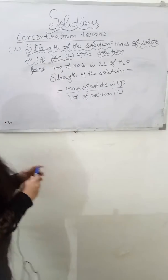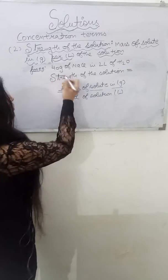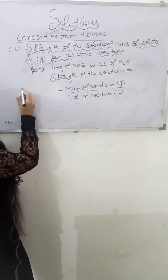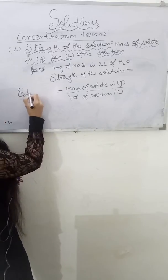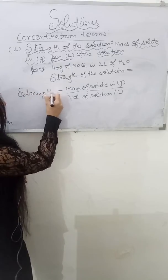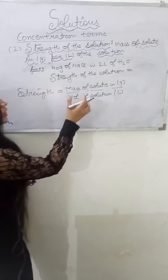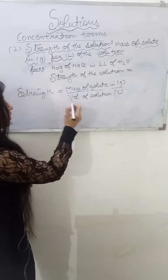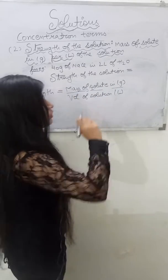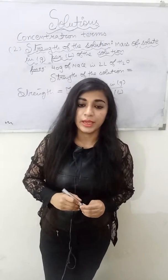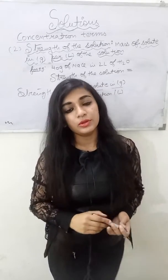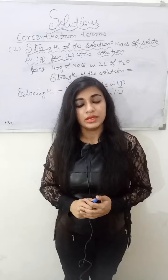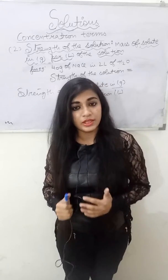Now, what will be the formula for the strength of the solution? The strength of the solution is defined as the mass of solute in grams per liter of the solution, that is, divided by the volume of solution in liters.